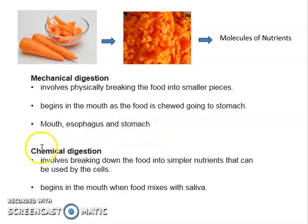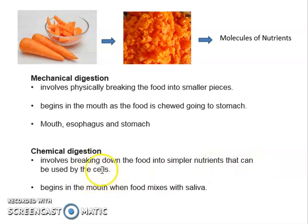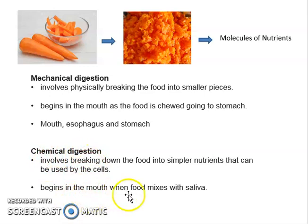Chemical digestion involves the breaking down of food into simpler nutrients that our cells can absorb. These nutrients will go to our cells. Where does chemical digestion start? It starts in our mouth also, when food mixes with saliva.